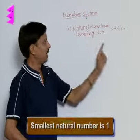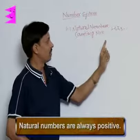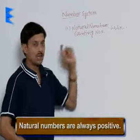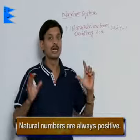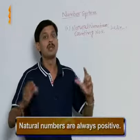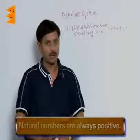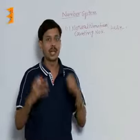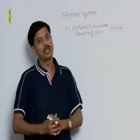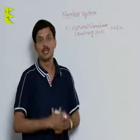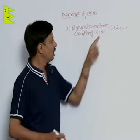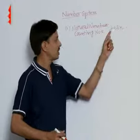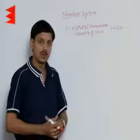These numbers are always positive and there is no largest possible natural number because every natural number has its successor. The smallest natural number is 1.